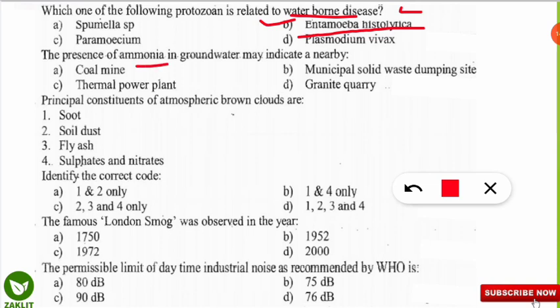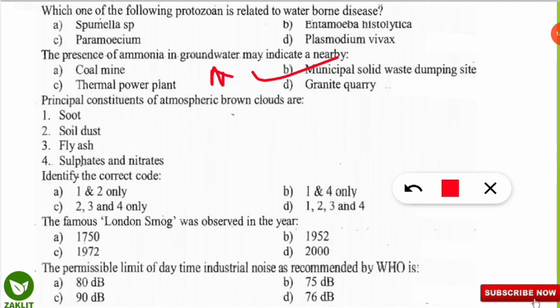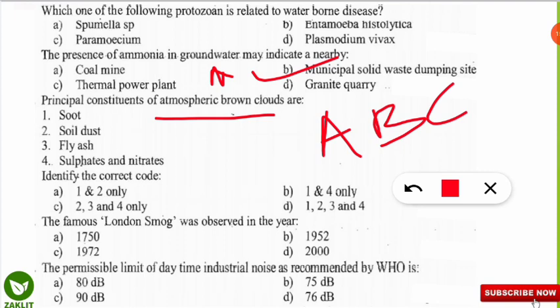The presence of ammonia in groundwater may indicate a nearby what — thermal power plant, coal mine, municipal solid waste, or granite quarry? The correct option is B — nearby municipal solid waste, where ammonia seeps into the groundwater causing water pollution. The next question on atmospheric brown clouds (ABCs): what are the principal constituents? The correct option is D — all of the following: soot, soil dust, fly ash, sulphates, and nitrates are the composition forming atmospheric brown clouds.